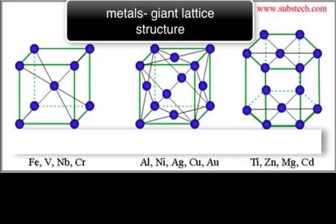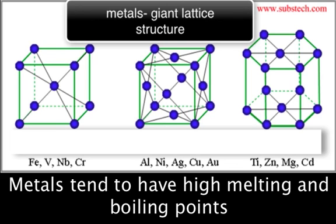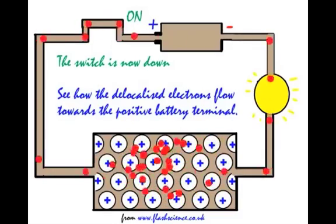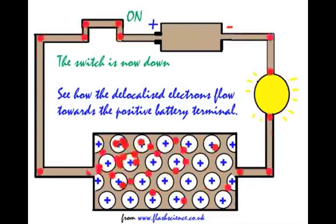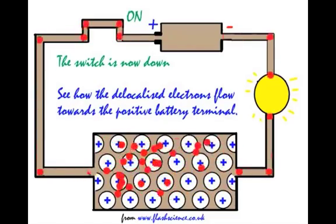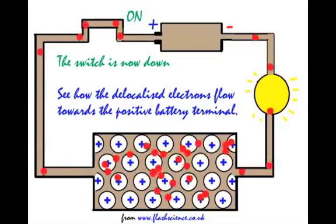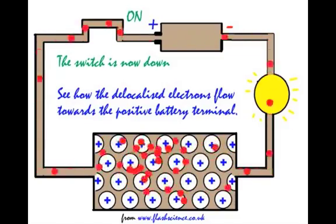So that leads to our first property. Giant metallic lattices mean that metals tend to have high melting and boiling points. The delocalised electrons mean that metals conduct electricity even when they're solid, because the electrons move freely and they act as charge carriers.